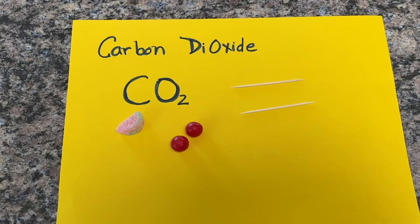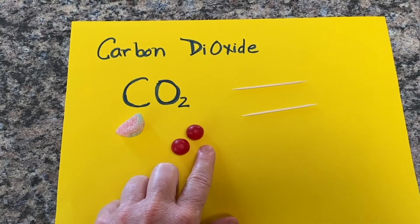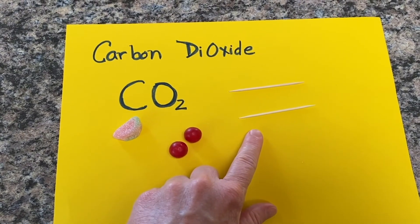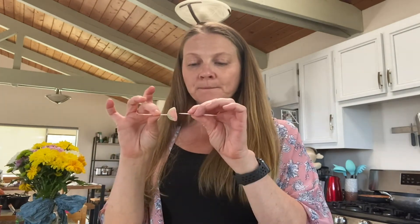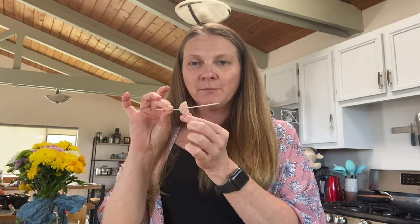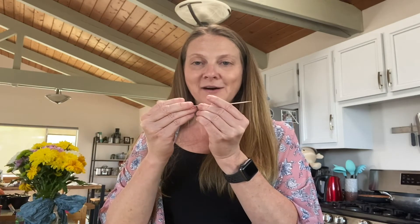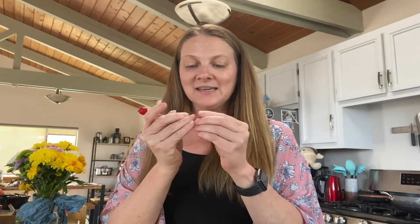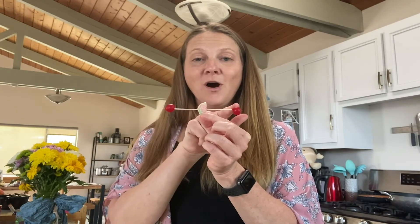The second molecule we're going to make today is carbon dioxide. That takes one carbon atom, two oxygen atoms, and then two more bonds. We start with our carbon atom and put in two toothpicks, one on each side, with the carbon atom in the middle. Now on the end of each toothpick, I'm going to slide on an oxygen atom — one oxygen atom, and here's our second. And now we've made carbon dioxide: carbon with two oxygen atoms.